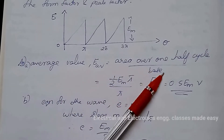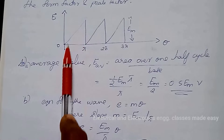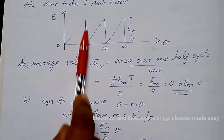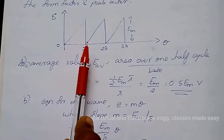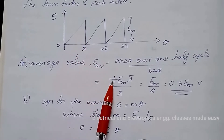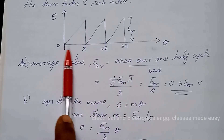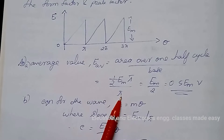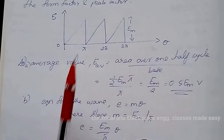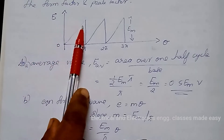To find the average value: e_average equals area over one half cycle divided by base. The area of this part is a right-angled triangle, so the area equals half base into height, that is half into pi into em. Divided by the base pi radians, we get em by 2, equal to 0.5 em volt.